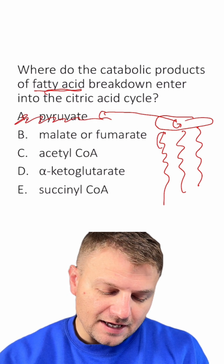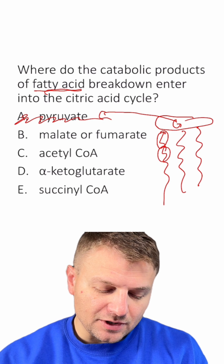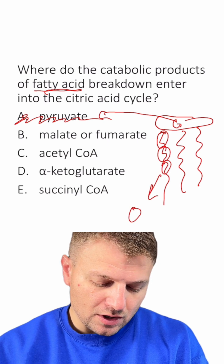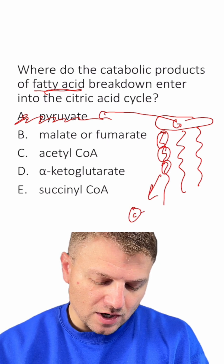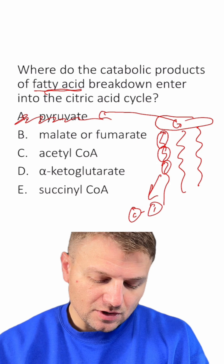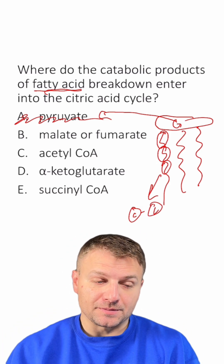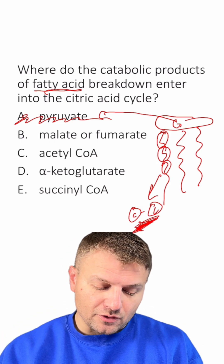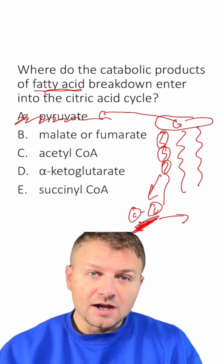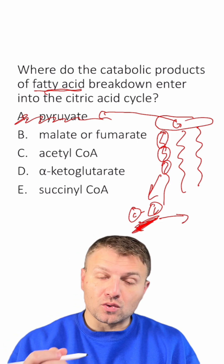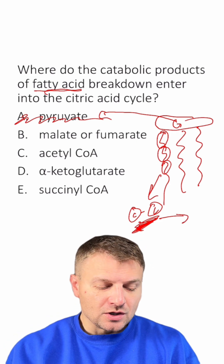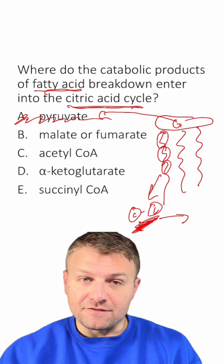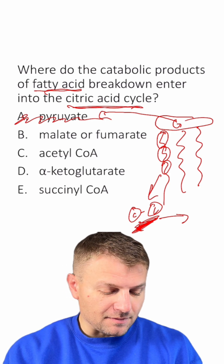These fatty acids are going to be broken down into two-carbon structures known as an acetyl group. These two-carbon compounds are going to enter the citric acid cycle, or the Krebs cycle. So that's the last part here — let's try to find that in our answers.